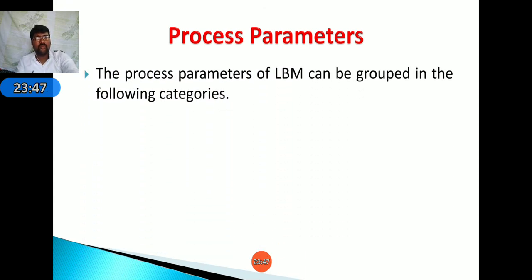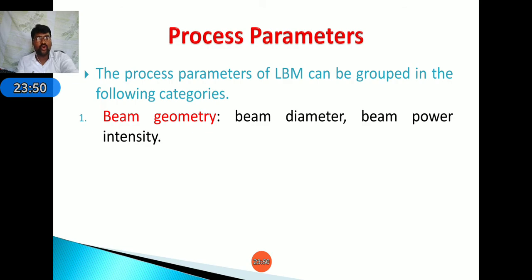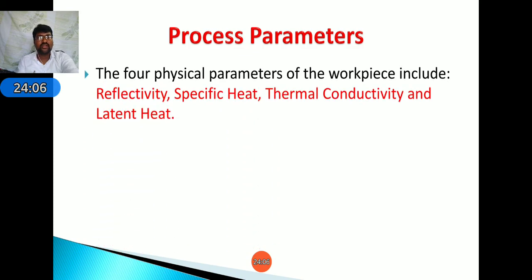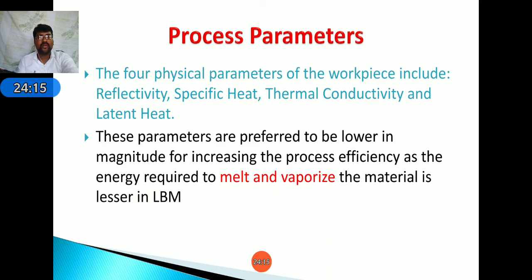Process parameters of LBM are divided into four categories: beam geometry (beam diameter, beam power, and intensity); target material properties (type, composition, hardness, fracture properties, and metallurgical properties); and physical properties (reflectivity, specific heat, thermal conductivity, and latent heat). These parameters are preferred to be lower in magnitude to increase process efficiency and reduce energy required to melt and vaporize the material.